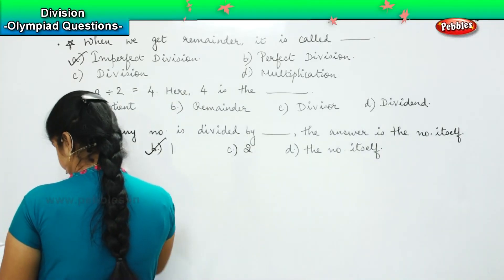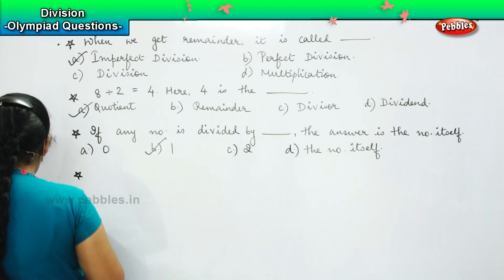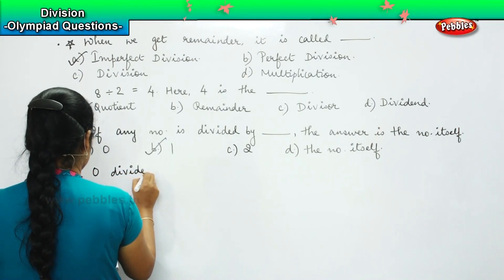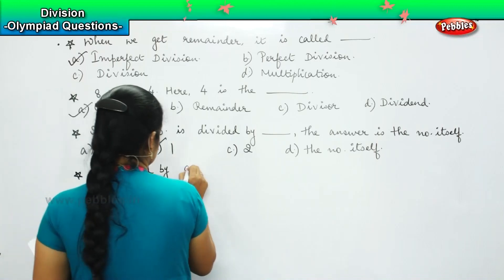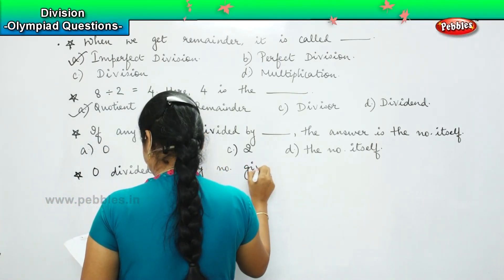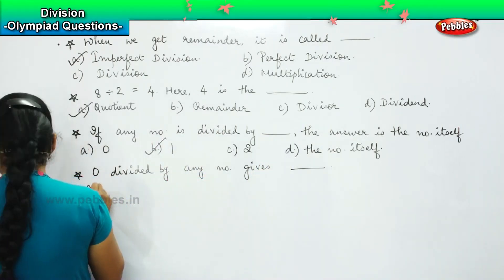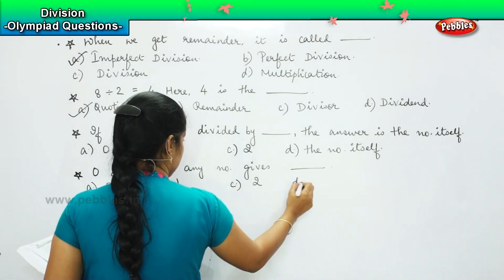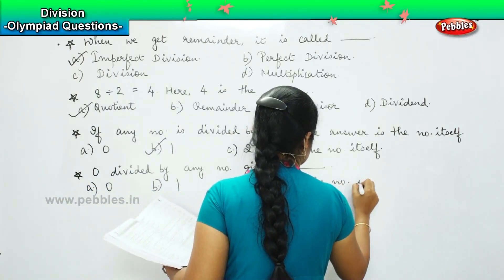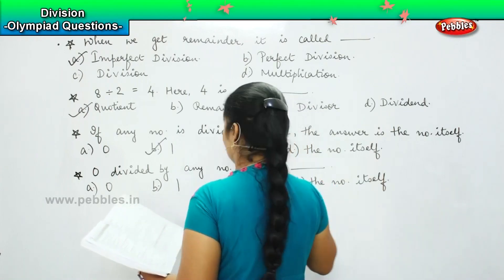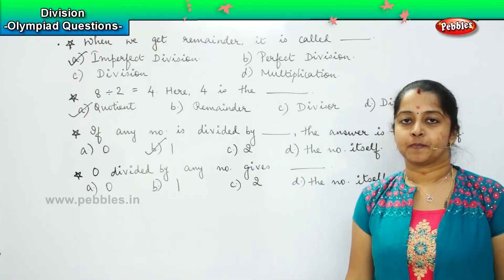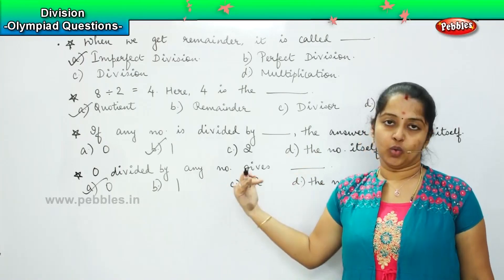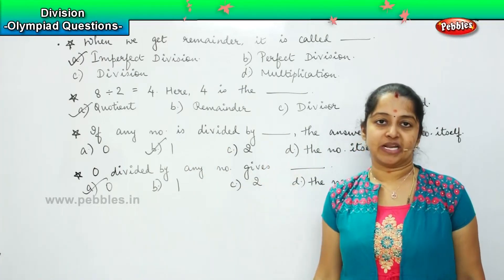Here is your next question. The question is: 0 divided by any number gives dash. The options are: A) 0, B) 1, C) 2, D) the number itself. So, 0 divided by any number is what, children? Fantastic, it is 0. It is not possible to divide any number with 0, but 0 divided by any number will give me an answer of 0.